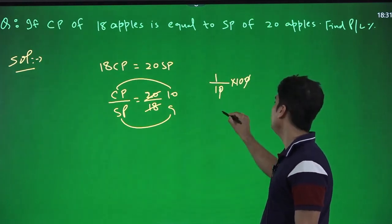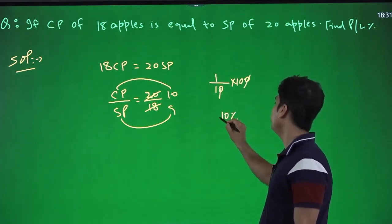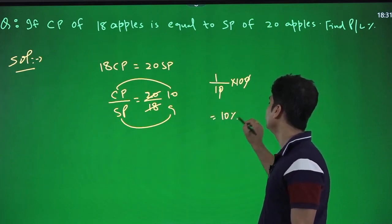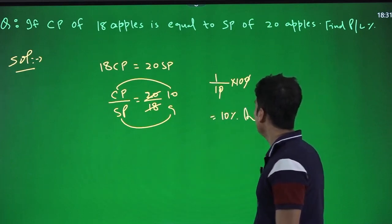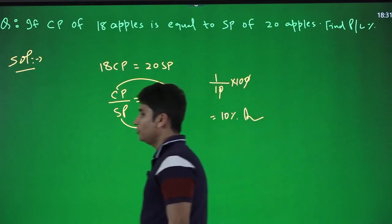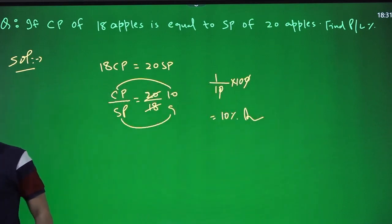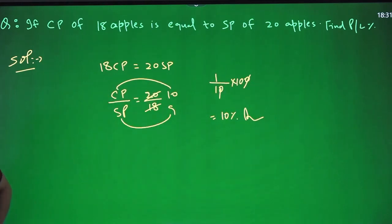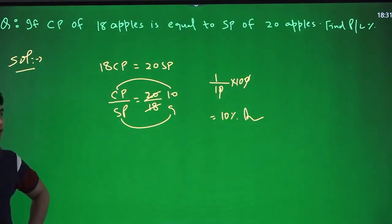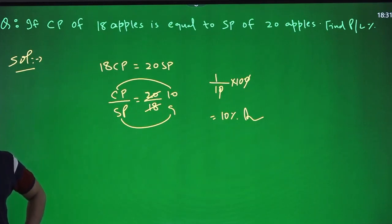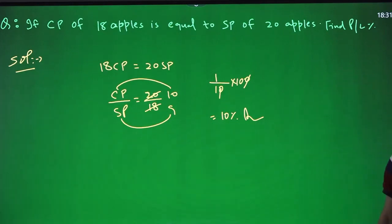So the answer is 10% loss. Now changing the question type: if 20% profit is calculated on CP, what percent profit is calculated on SP?